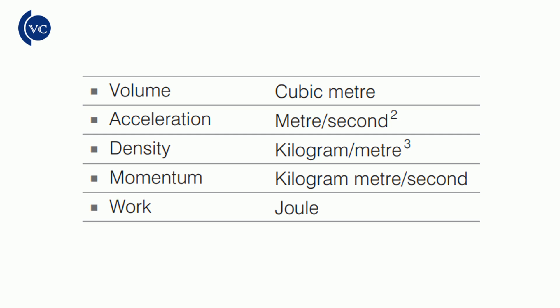Volume — the unit of volume is cubic meter (meter cube). We will start with the 3D object, the cube. The volume of a cube is calculated by multiplying the side three times. So the unit goes from meter to centimeter cube, and the standard unit is the meter cube.